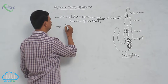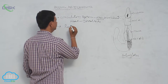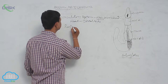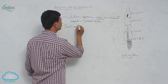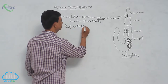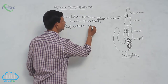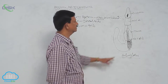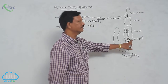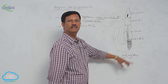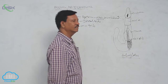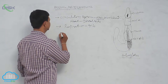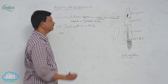Respiration takes place through the body surface by gills. Here you can see in the trunk region, gills are present inside, and the exchange of gases takes place there.